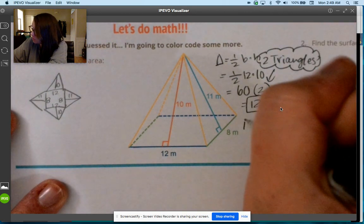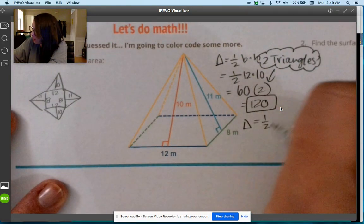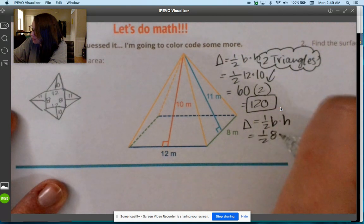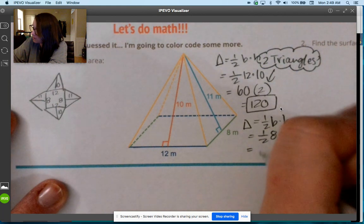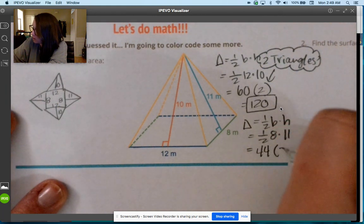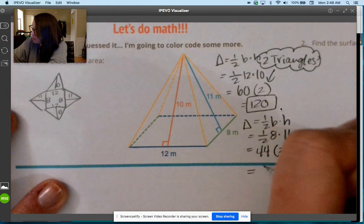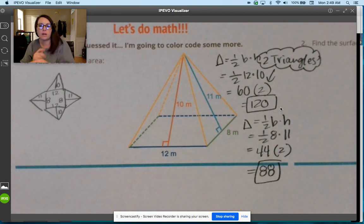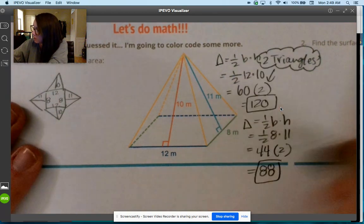We'll do the other triangle: one half base times height, so one half of 8 times 11. That's 4 times 11 is 44, times 2 is 88. Now we have the triangles taken care of. If I went through that too fast, just back it up a little.